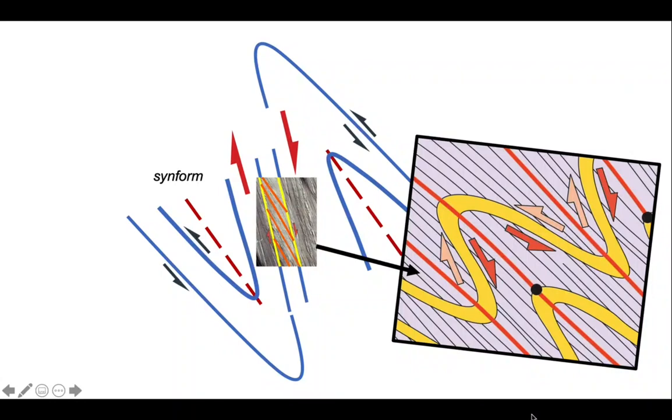We can use the cleavage orientation to forecast the orientation of the fold axial surfaces by assuming it is parallel, and we can use the sense of asymmetry of cleavage with respect to bedding to establish which limb we are on. If there was no asymmetry, we would be on a hinge area.